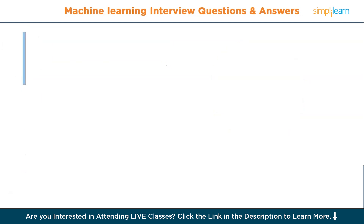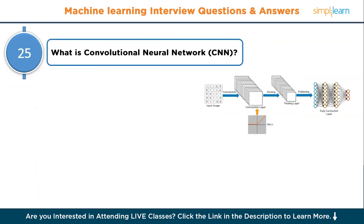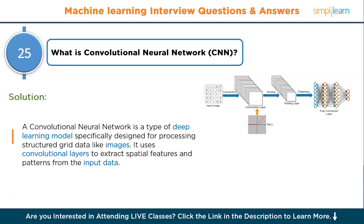Question number twenty-five: what is a convolutional neural network (CNN)? A convolutional neural network is a type of deep learning model specifically designed for processing structured grid data like images. It uses convolutional layers to extract spatial features and patterns from the input data.